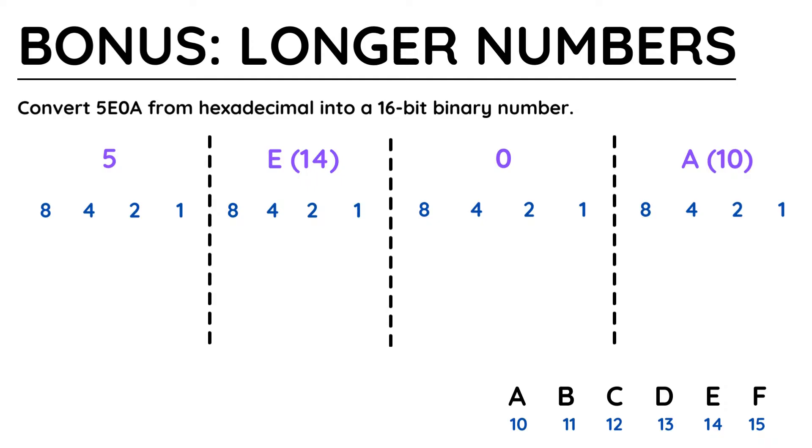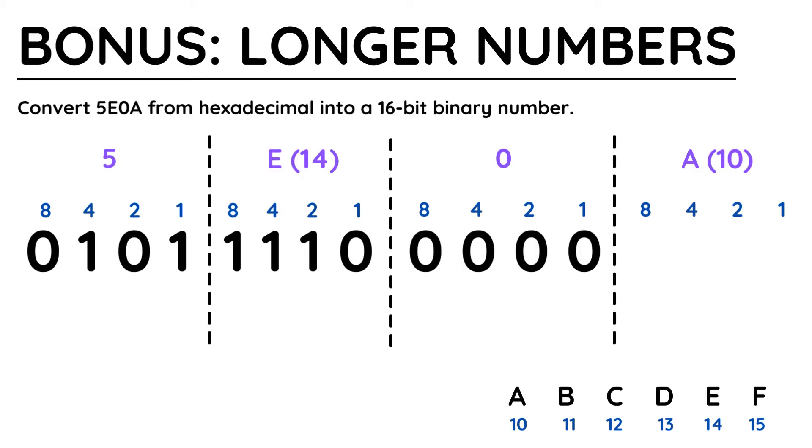5 is just 4 plus 1 for a really simple calculation. Next is E, which is equivalent to 14, which is 8 plus 4 plus 2. If it's 0, don't leave it blank, you need to put a 0 for each of the 4 bits.